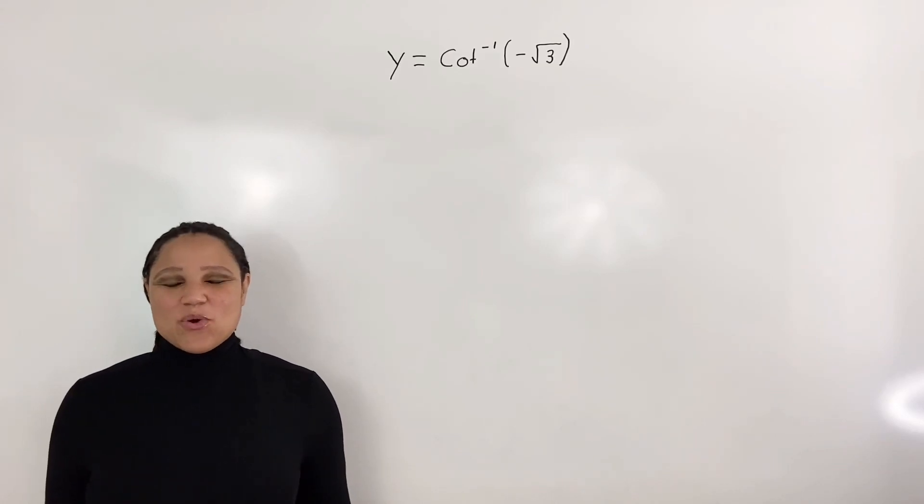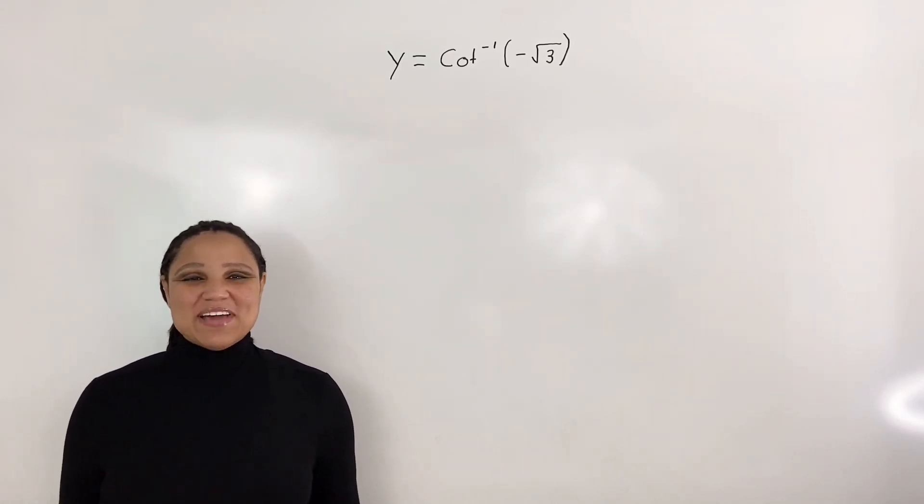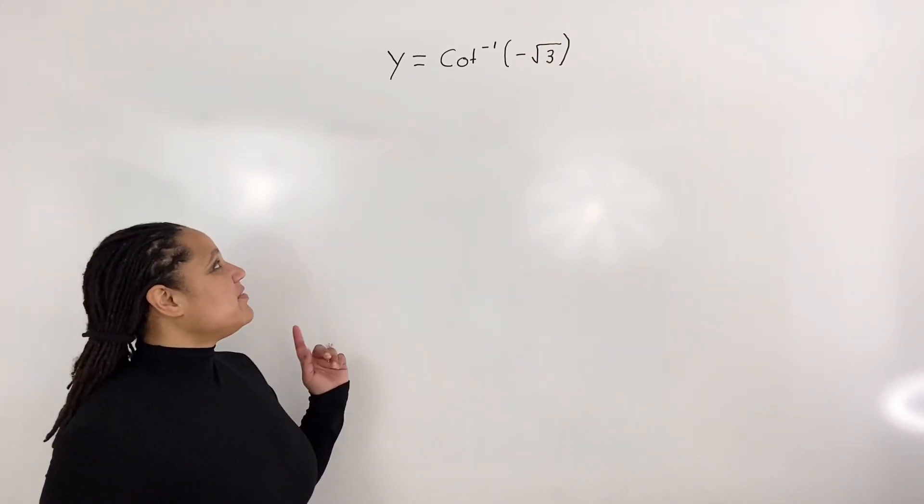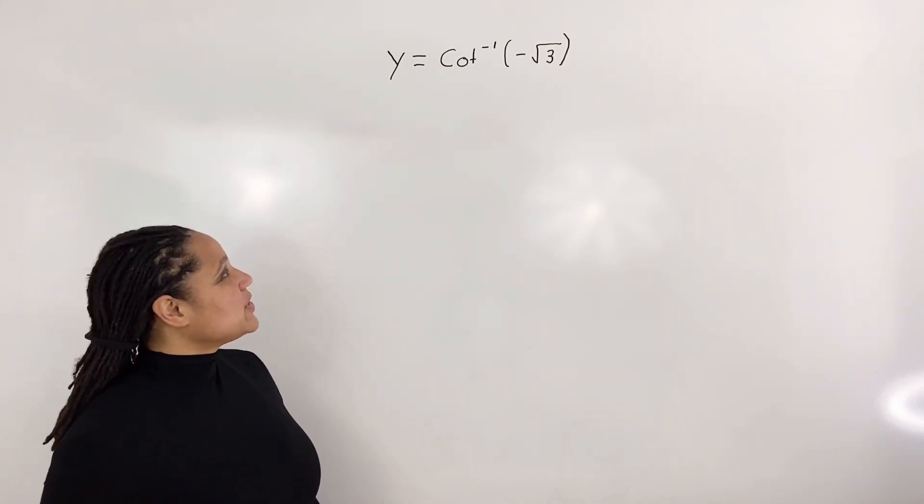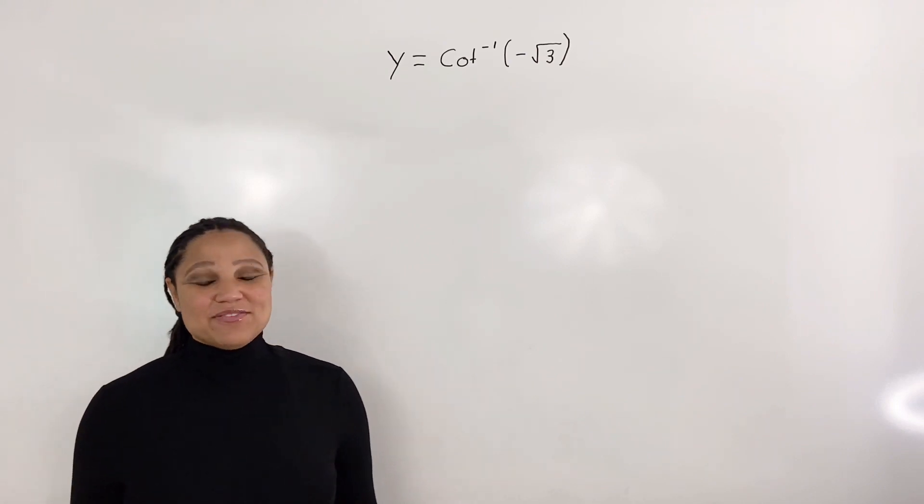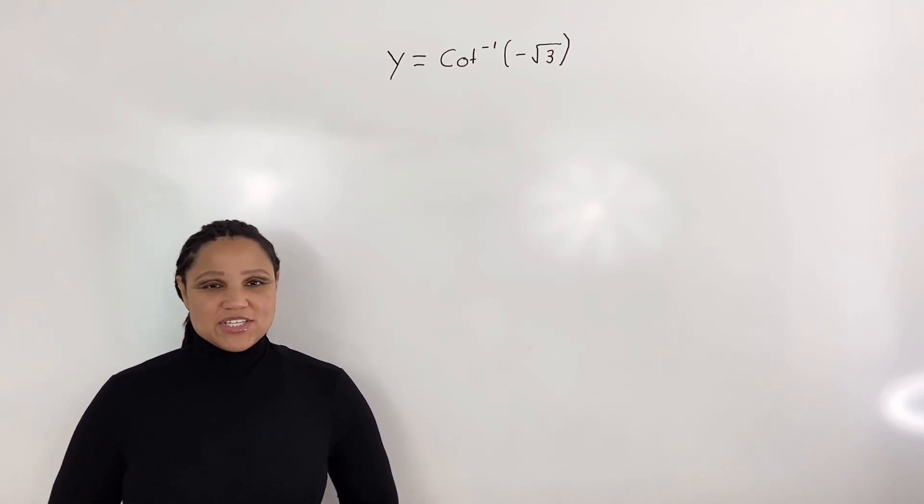In this video, we are going to find the exact value of inverse cotangent. Here we have y equals inverse cotangent of negative root 3. And we want to find the exact value of inverse cotangent.